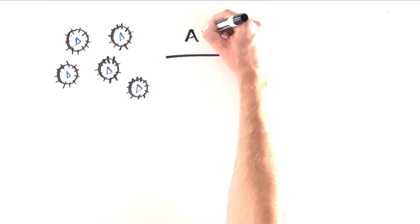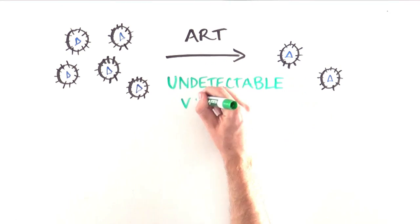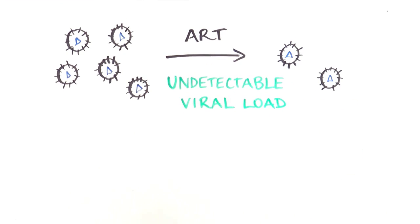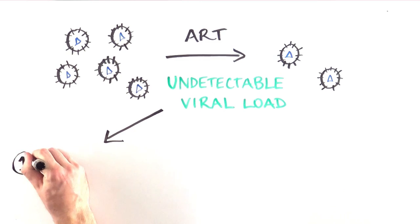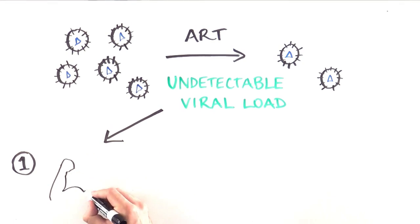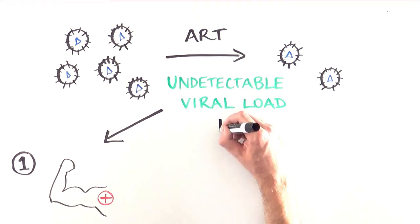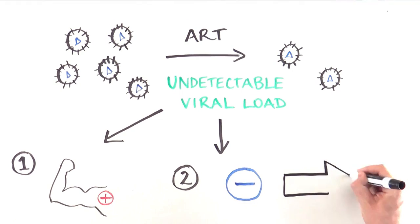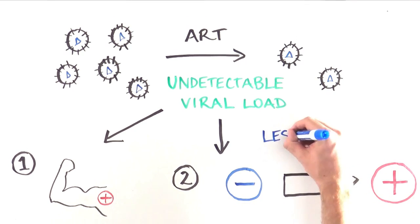As we just talked about, antiretroviral therapy can reduce the amount of virus in the blood to an undetectable viral load. This has two important consequences. The HIV positive person will be healthier, since they are living with less HIV virus killing fewer cells in their immune system and causing fewer other illnesses.